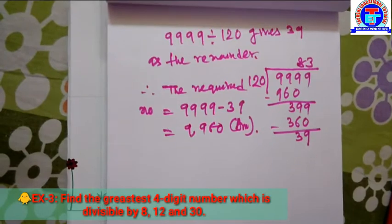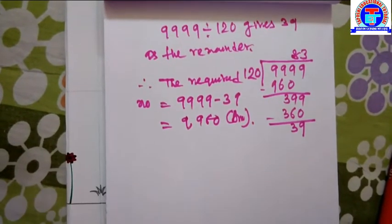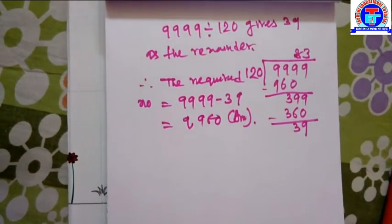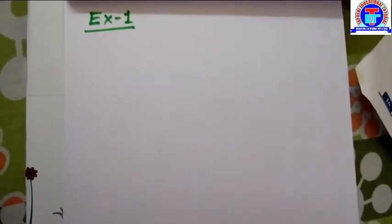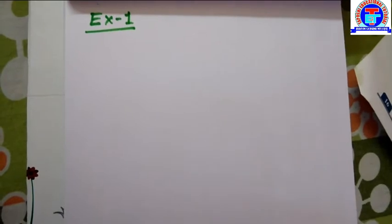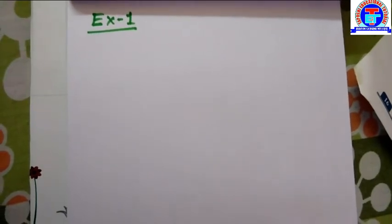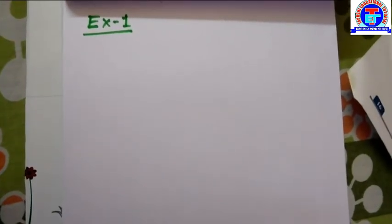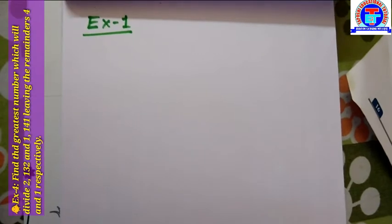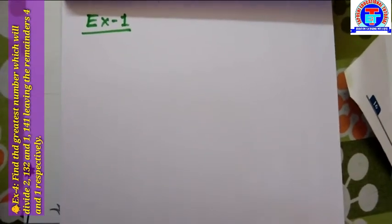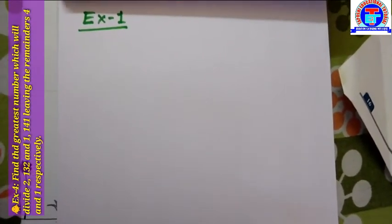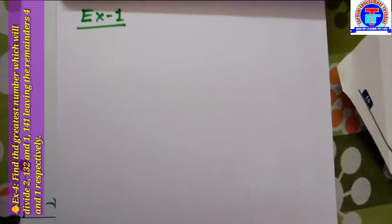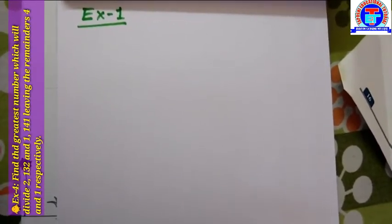Thank you for watching this video. Here we are going to solve a problem: find the greatest number which will divide 2132 and 1141 leaving remainders 4 and 1 respectively.